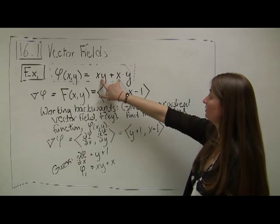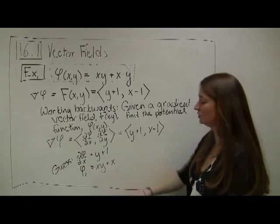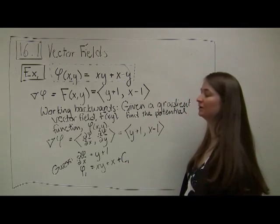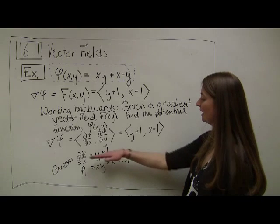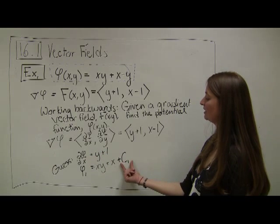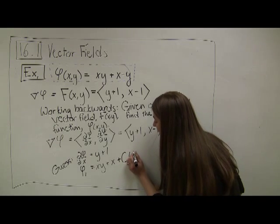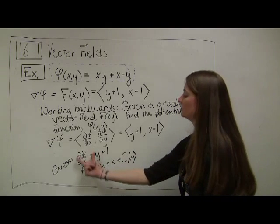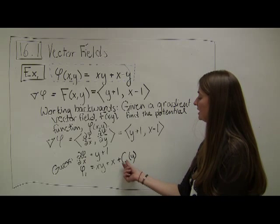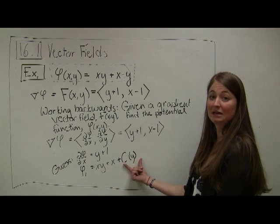I took the anti-derivative with respect to x, treating y as a constant, so I just attach x as a coefficient. But notice that this phi function is close to the original but leaves out the negative y term. Any time you anti-differentiate, you need to keep track of your constant. We know this from single-variable calculus — constants go to zero when you differentiate. We have to be careful because this constant could be some function of y, since when we take derivatives with respect to x, we treat y as a constant.